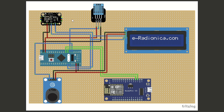Next we have the BMP280, which is a barometer. It has 6 terminals but we use only 4. VCC goes to 3.3V of STM32, ground to the ground of STM32, and then we have SCL and SDA which are the I2C pins. The SCL pin goes to B6 of STM32 and the SDA pin goes to B7 of STM32.